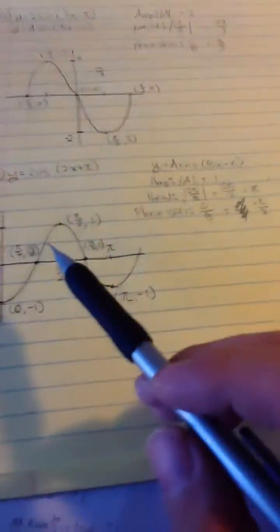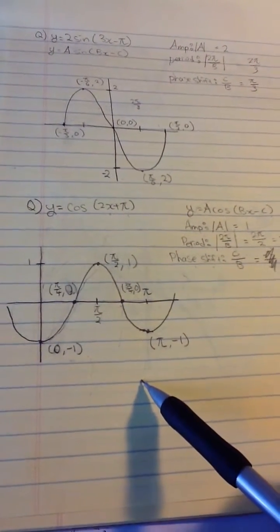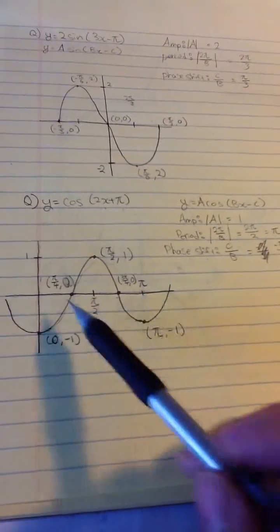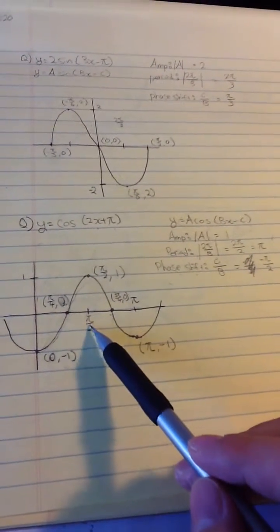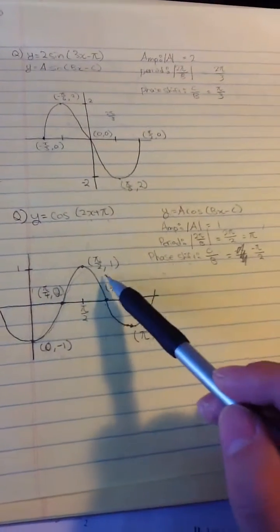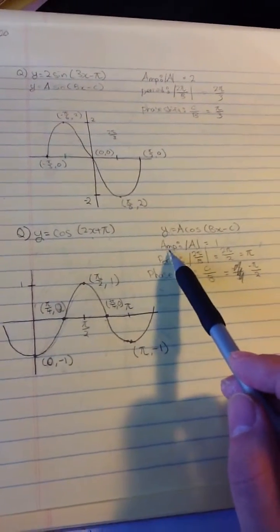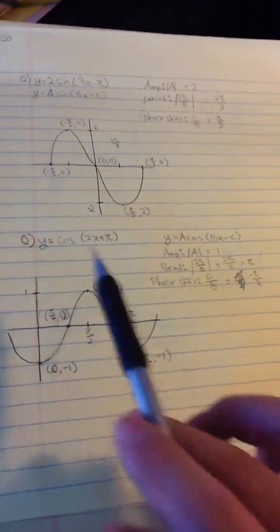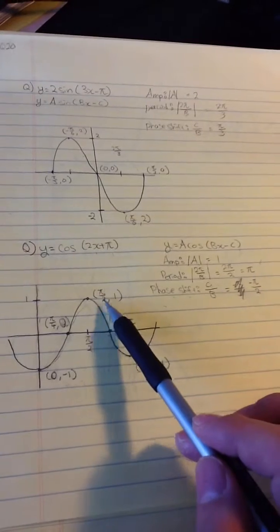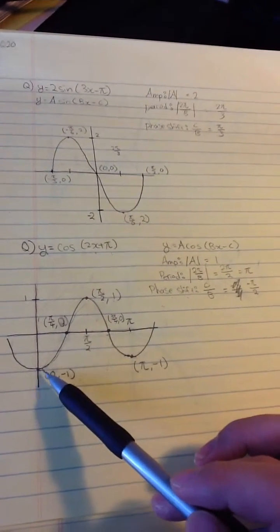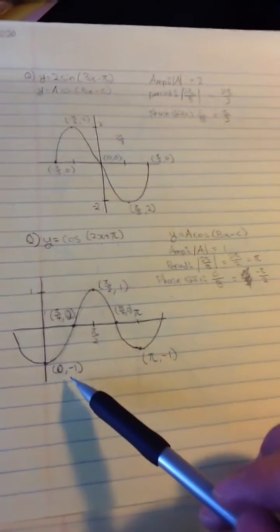For the five major points: this one cycle here ends at π, so the period is π. The middle point, the maximum, should be at π over 2. So at the maximum we have x = π/2 and y = 1. The y value is 1 because that equals the amplitude.